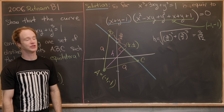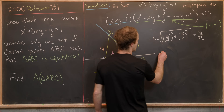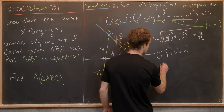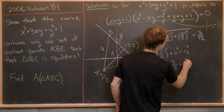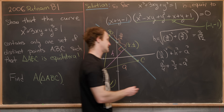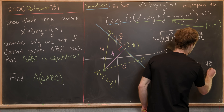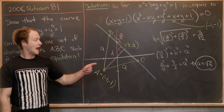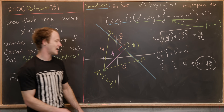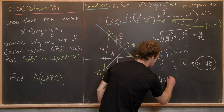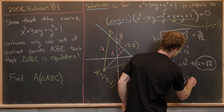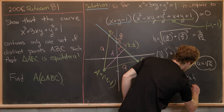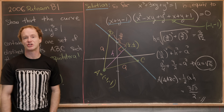With side length s = √6 and height h = 3/√2, we can find the area of triangle ABC. The area is (1/2) · base · height = (1/2) · √6 · (3/√2) = 3√3/2. So the area of the equilateral triangle is 3√3/2, and that's a good place to stop.